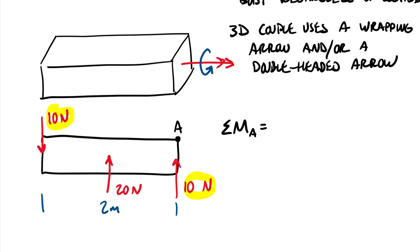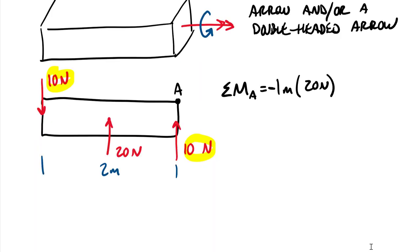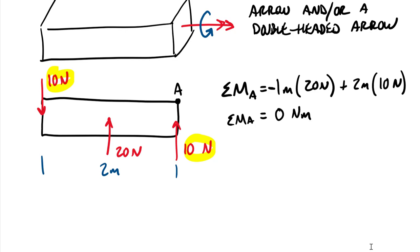Summing moments at point A, ignoring the force couple: there's no moment from the 10-newton force at A, there is a moment from the 20-newton force at one meter — negative from the right-hand rule giving −20 newton-meters — and then there's a moment from the 10-newton force at the far left end, two meters away, giving +20 newton-meters. So the sum of moments at point A equals zero newton-meters. Nothing earth-shattering — it just came down to the magnitudes and distances.